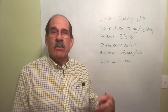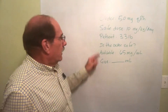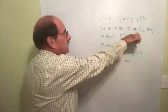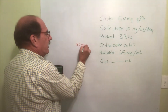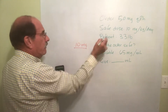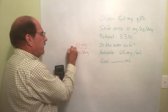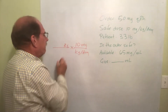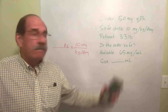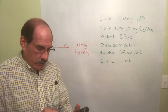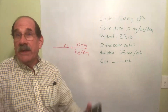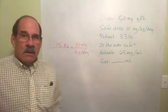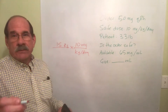The patient weighs 33 pounds. I've been doing this math for the past two weeks for different reasons. I take my safe dose of 10 milligrams per kilogram per day and multiply by the patient's weight in kilograms so the units cancel. Take 33 pounds and divide by 2.2 to convert to kilograms — the answer is 15. The patient weighs 15 kilograms.